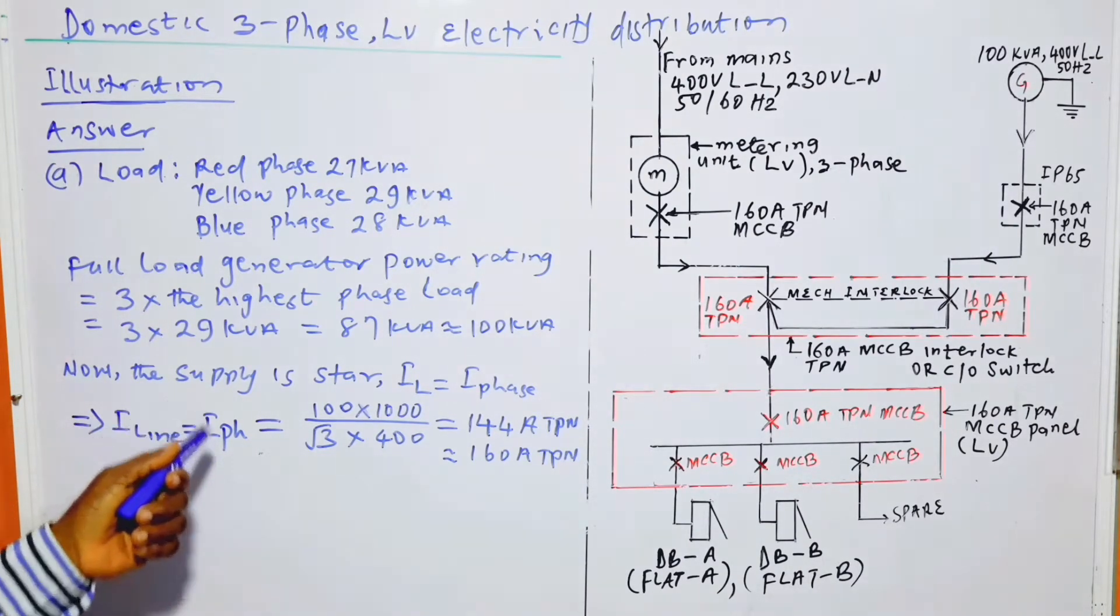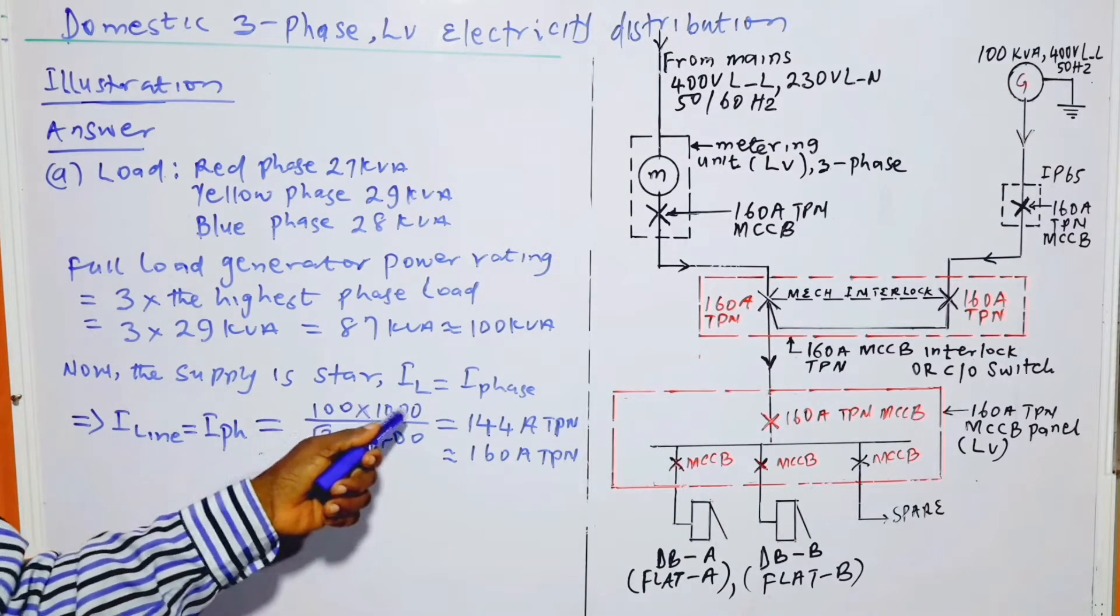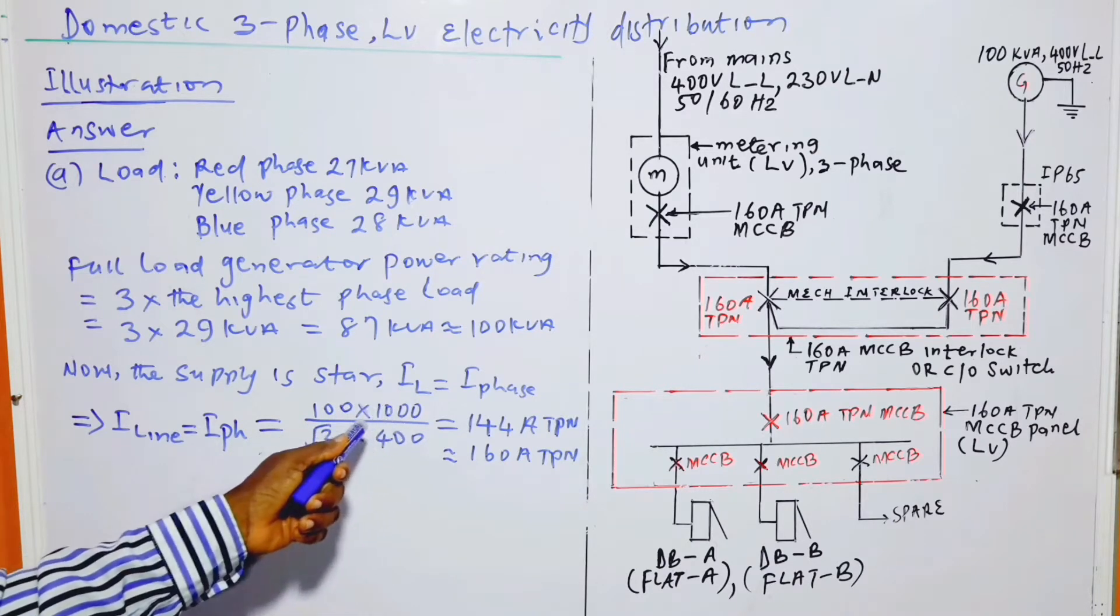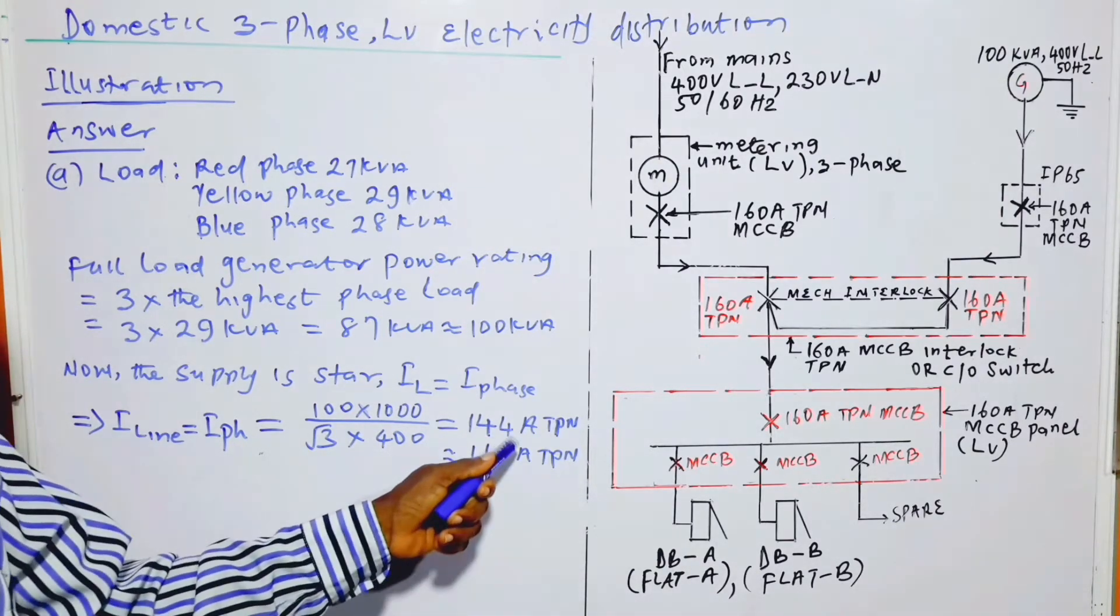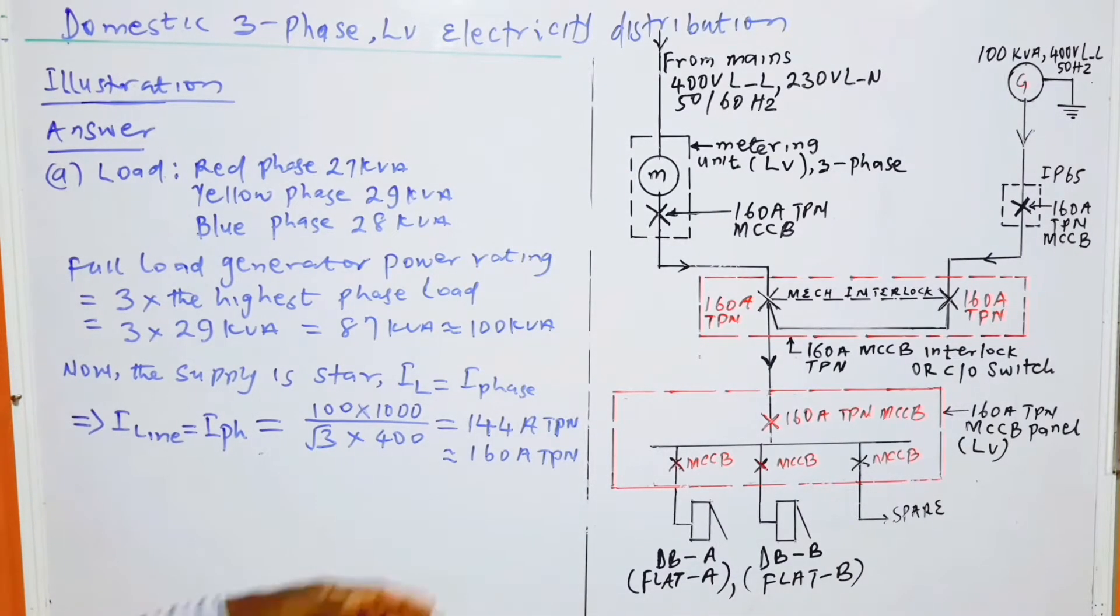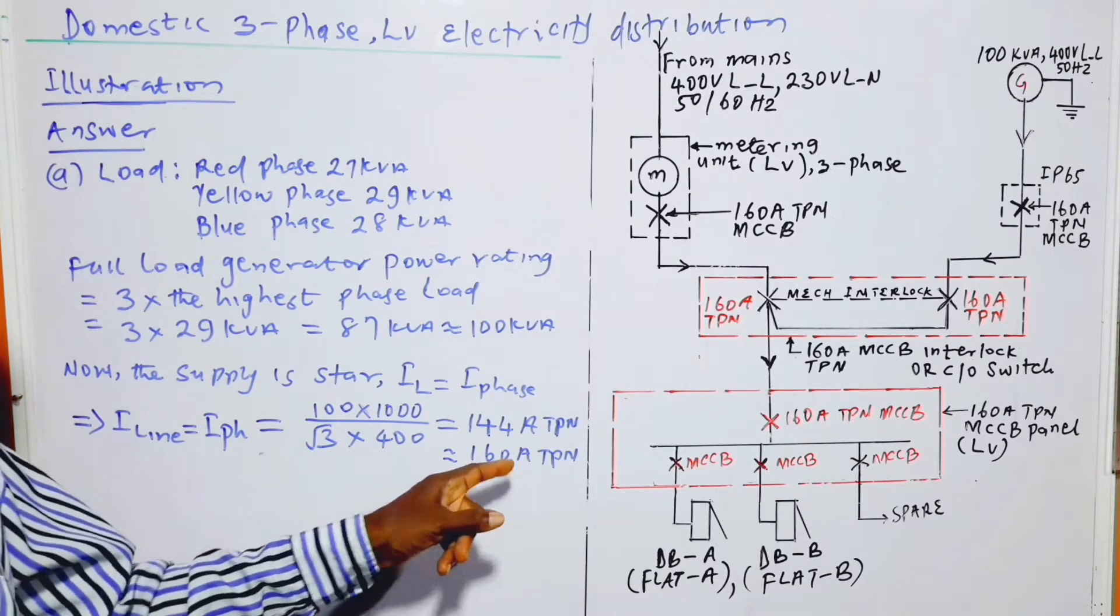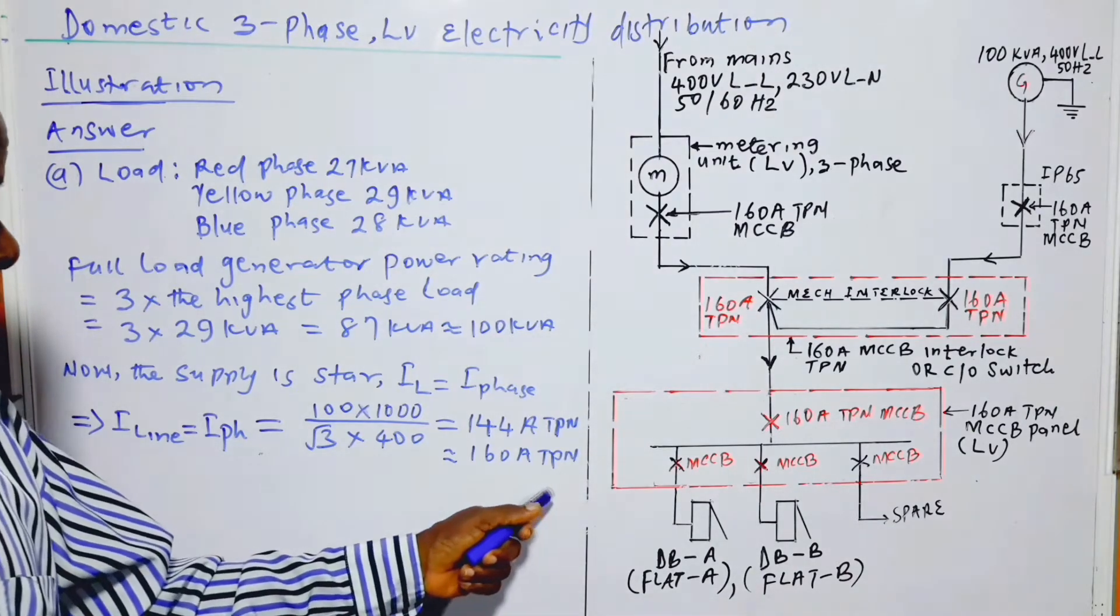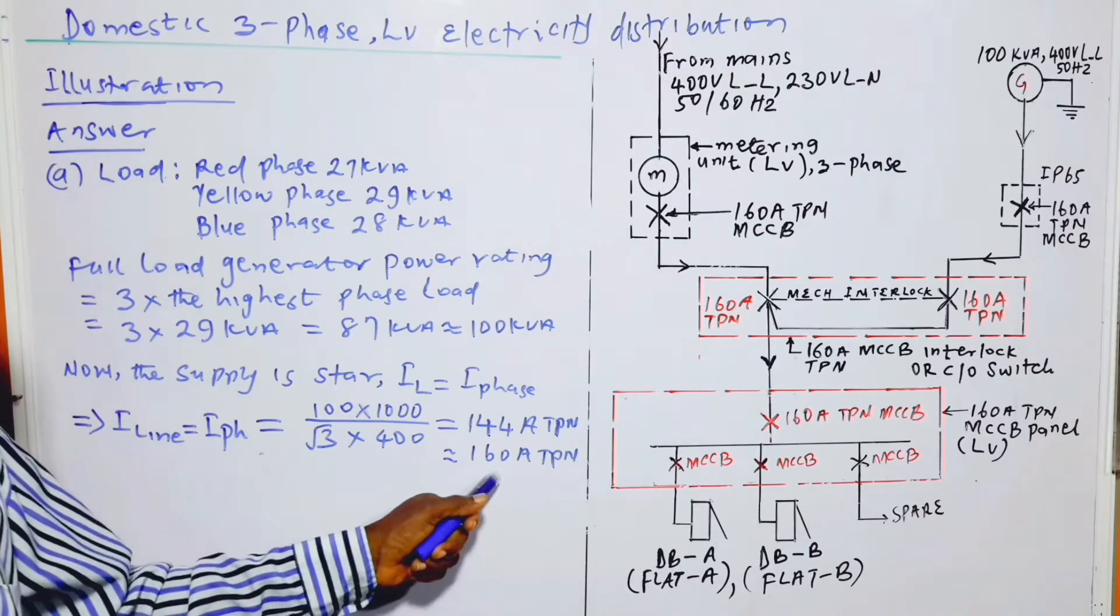When we have star connection, I-line equals I-phase, and the value is calculated as 100 times 1000 divided by 3 times 400, and that is 144 amperes. The next available circuit breaker in the market is 160 ampere triple phase with neutral. This is MCCB.